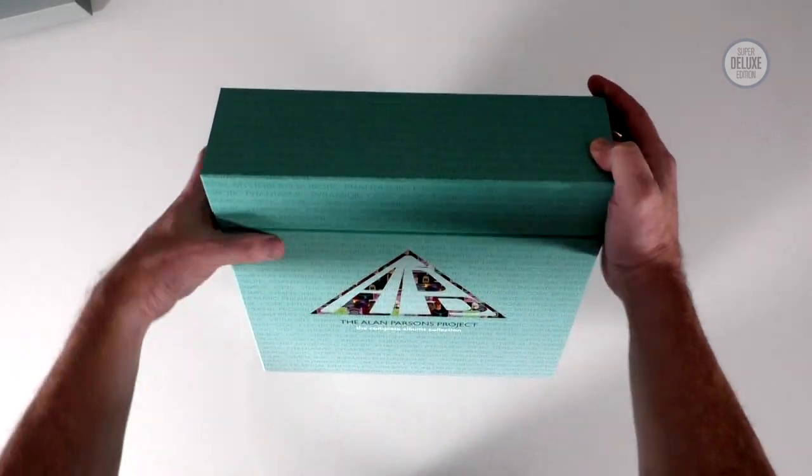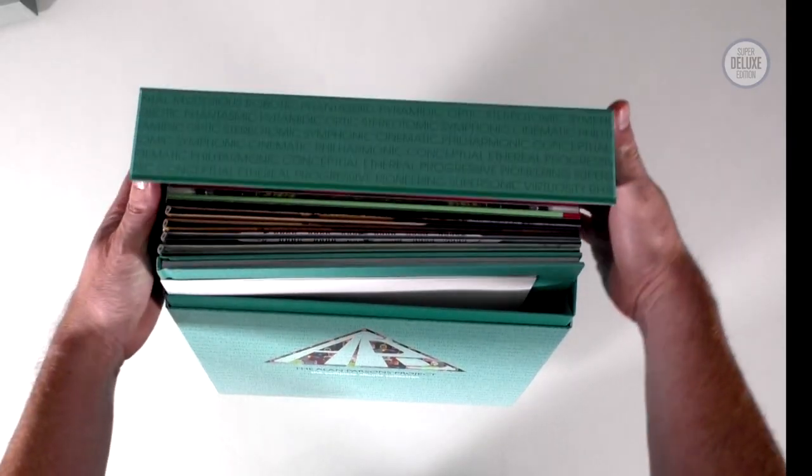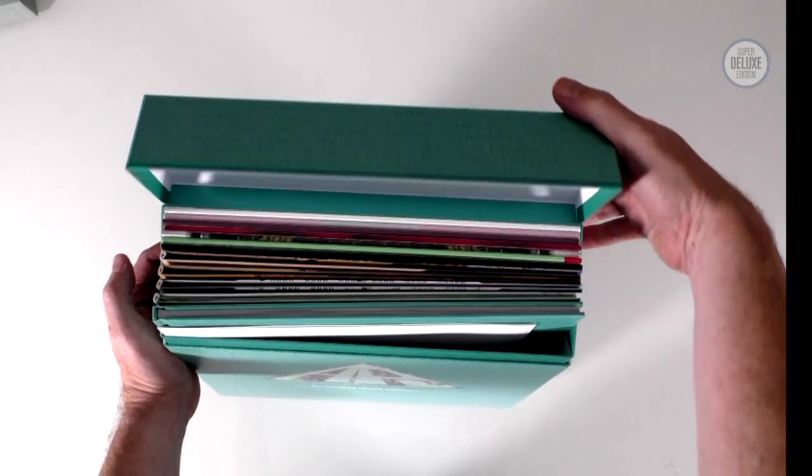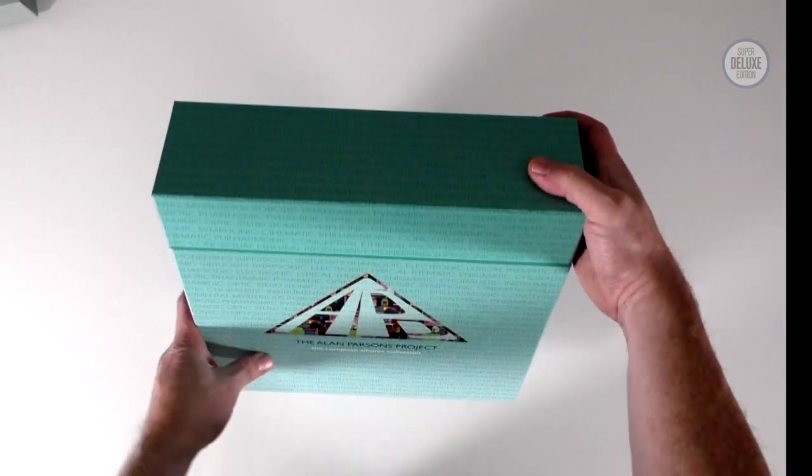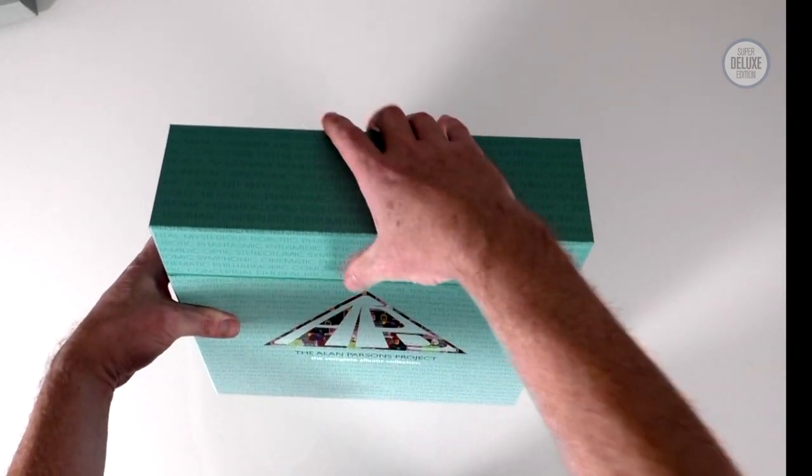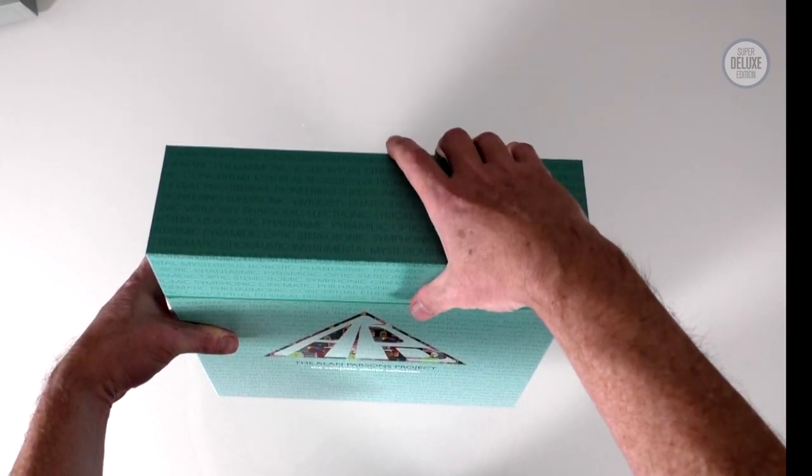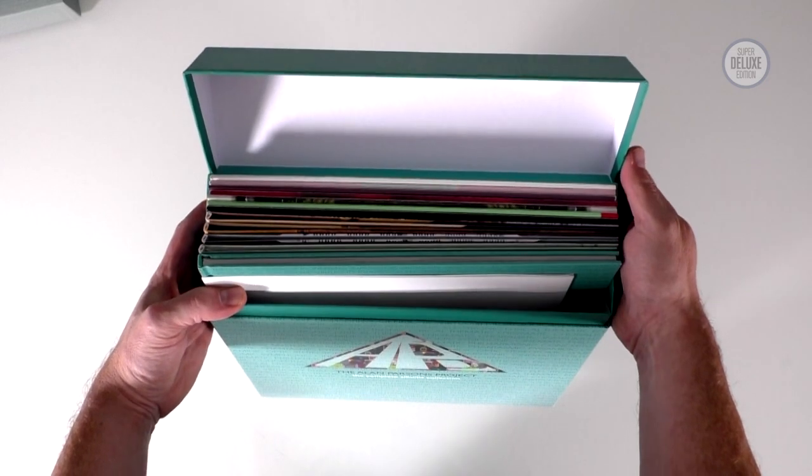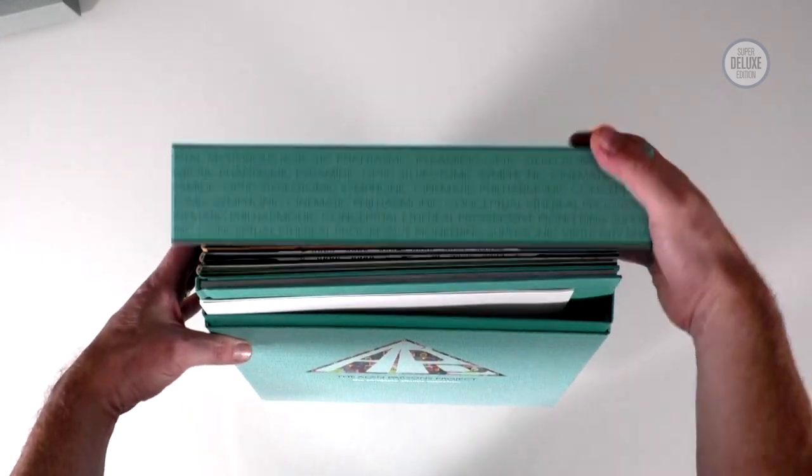It comes in this cigarette style outer box here. So that doesn't actually lift off completely, it just folds back. Which I think is quite good actually. I've got a few boxes where this bit lifts off, so every time you pick up the box it comes away in your hand. So that's interesting, the way that they've chosen to package it.